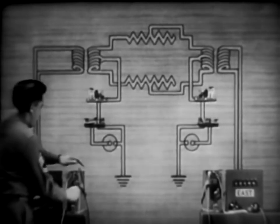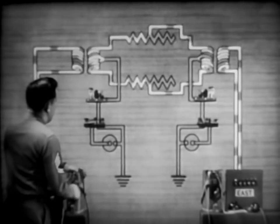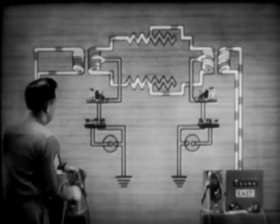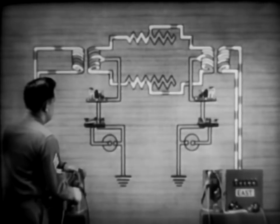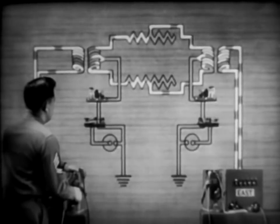Now for the telephone circuit. Here is the path for ringing current from west to east. Voice currents would follow the same path.